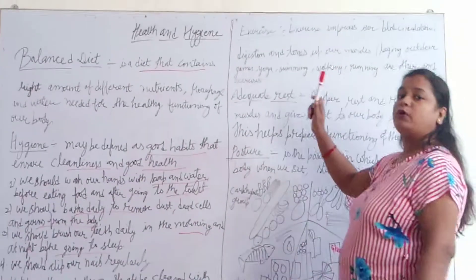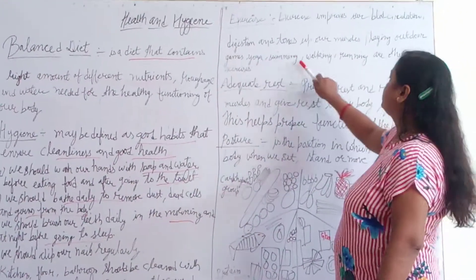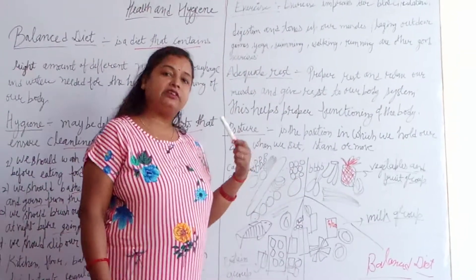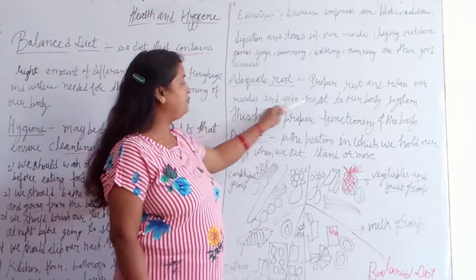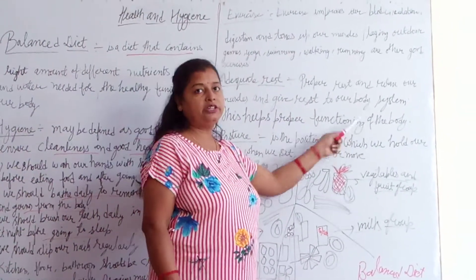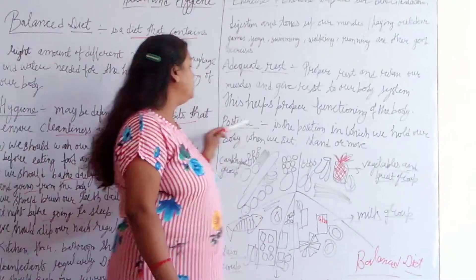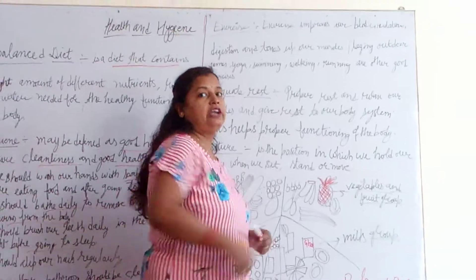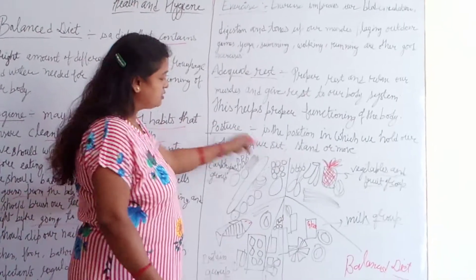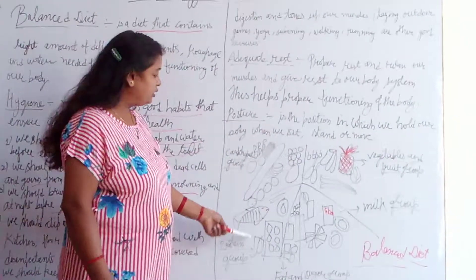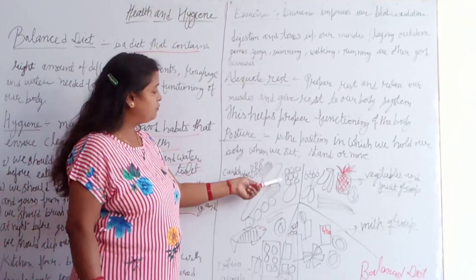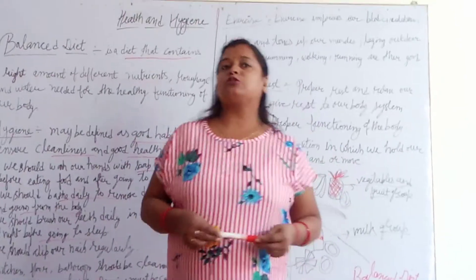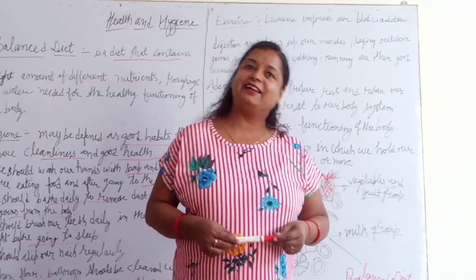We should keep our surroundings clean. Exercise is necessary to keep your body fit and healthy — outdoor games, yoga, swimming, walking, and running. Adequate rest is also necessary; take proper rest to relax muscles and allow proper functioning of the body so you feel fresh the next day. Posture is the position we hold when we sit, stand, or move — always keep your posture straight. Look at the balanced diet chart with fruit, vegetable, milk, protein, and carbohydrate groups. It is necessary to follow a balanced diet to keep your body fit and healthy.